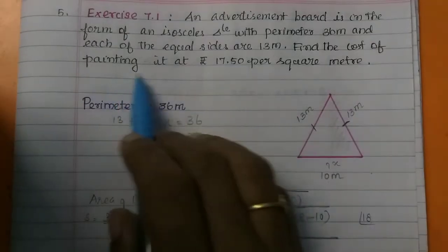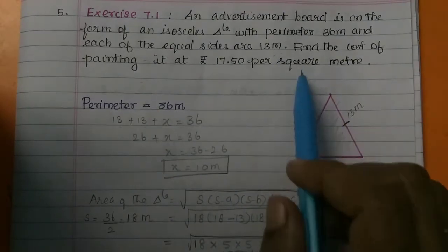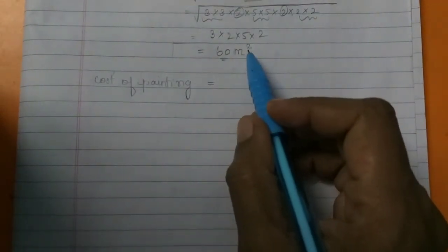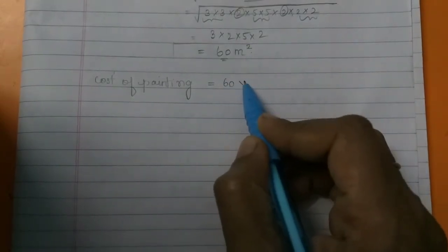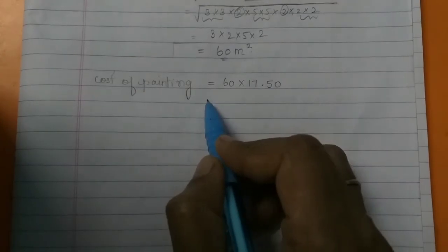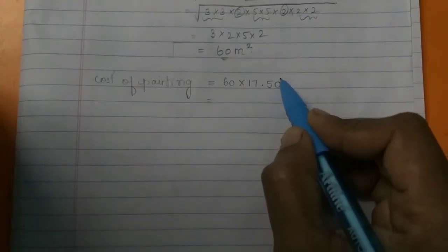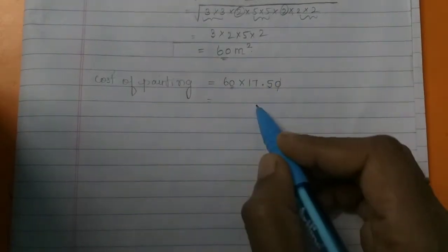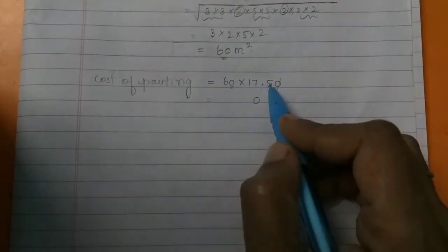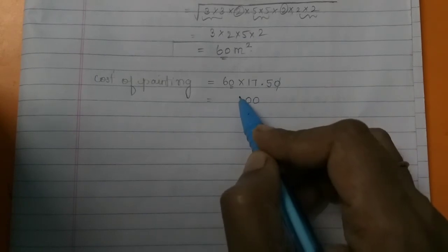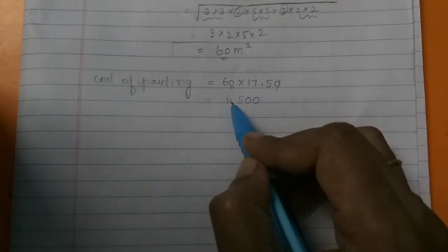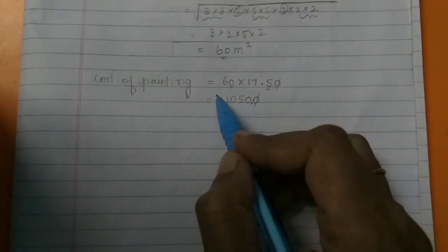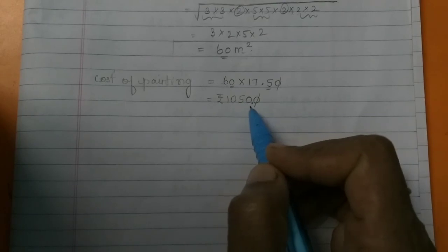Now, the cost of painting at rupees 17.50 per square meter. So 1 square meter costs Rs. 17.50, and the area is 60 square meters. So cost equals 60 into 17.50. Multiplying 60 by 17.50 gives us: 60 times 175 divided by 10 equals 1050. So the cost of painting 60 square meters is rupees 1050.